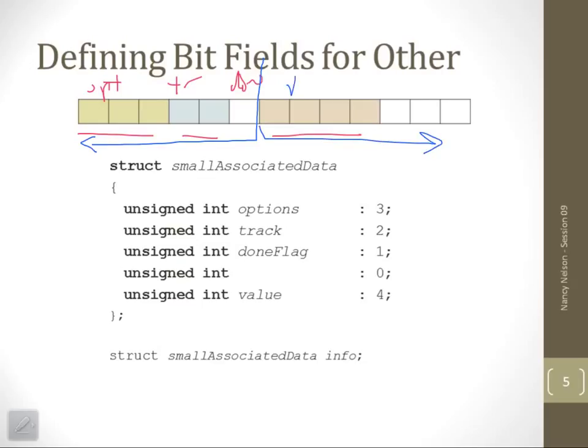This one would be value. My data type is struct small associated data, and my variable name is info.